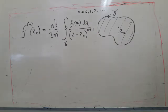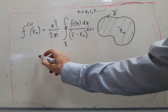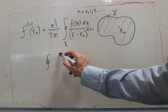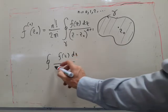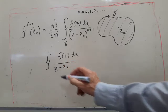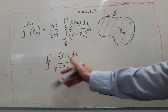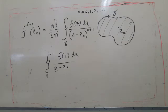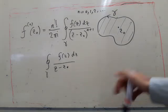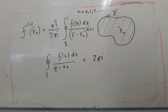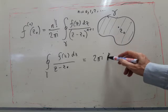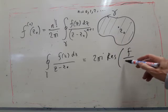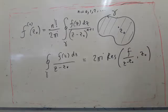So to show why this is true, we just start off with considering this. Now f of z is analytic, so the only pole we have is as a result of this one over z minus z naught. So we know from the residue theorem that this has to be equal to two pi i times the residue of f over z minus z naught at z zero. That's the only singularity of this function.